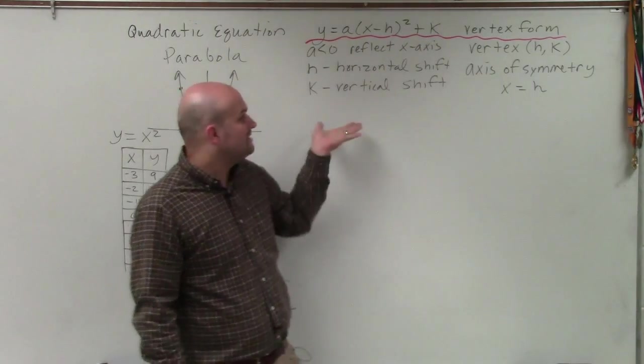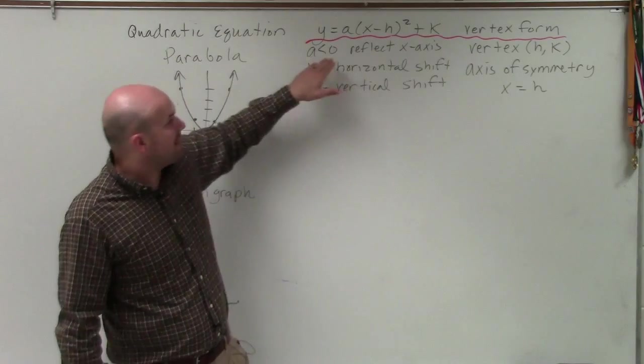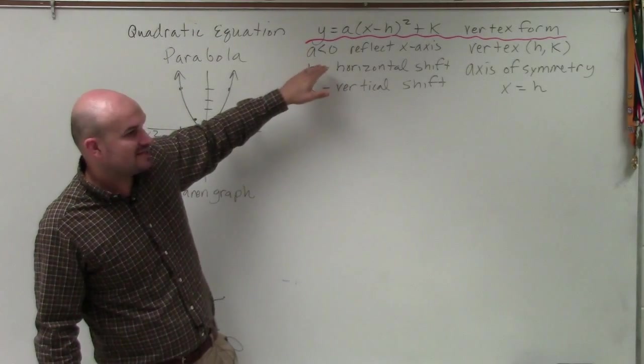And then we have our k. That's going to be our vertical shifts, up and down. And when a is less than 1, it is a reflection about the x-axis.